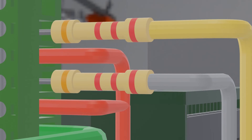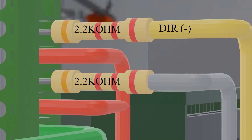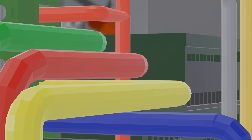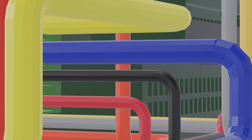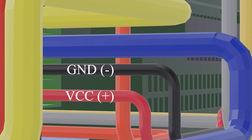Now we will see the connections of the pulse and direction. We have two resistors of 2.2 kΩ, medium watt, connected to the negative direction and negative pulse. On the other hand, we have the positive direction and positive pulse together, which connect to the positive supply of the PLC. Then we have the four motor signals: B negative, B positive, A negative, and A positive, and the 24-volt supply GND negative and VCC positive.